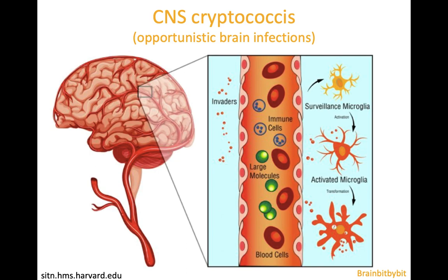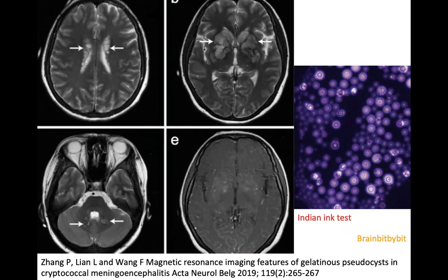I will continue with cryptococcus of the central nervous system, which is the second most common opportunistic infection in patients with HIV after toxoplasmosis. Cryptococcus is a yeast, a fungus.